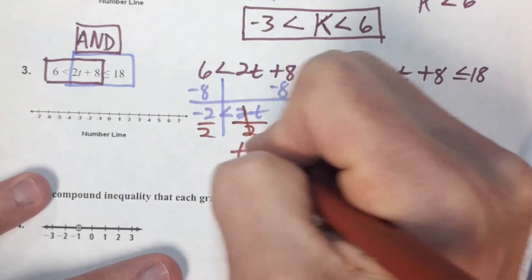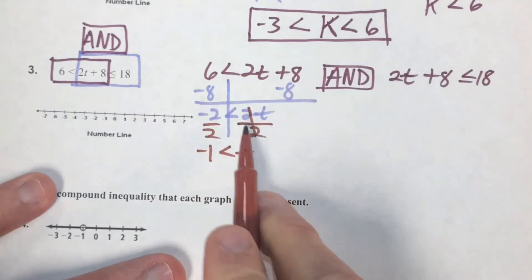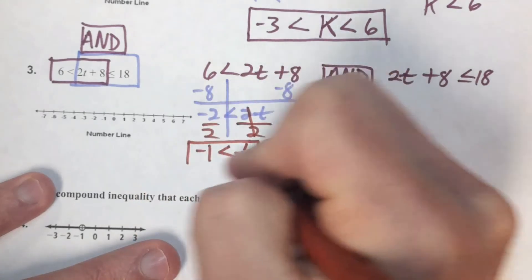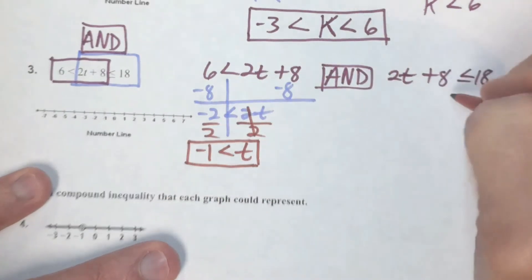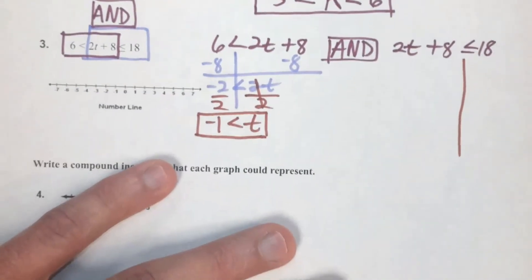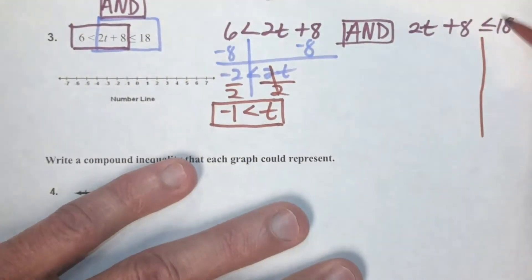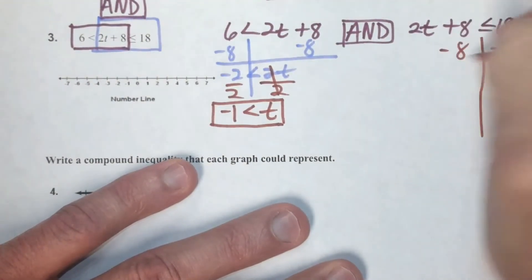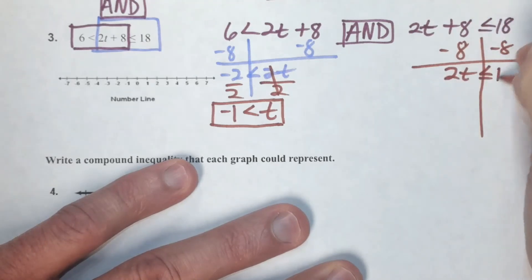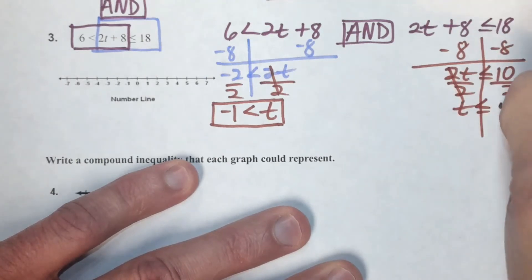Solve the first part: subtract eight from both sides — negative two less than two t — divide by two. Coefficient is not negative, so no flip. Result: t greater than negative one. Second part: subtract eight from both sides, divide by two — positive coefficient, no flip. Result: t less than or equal to five.